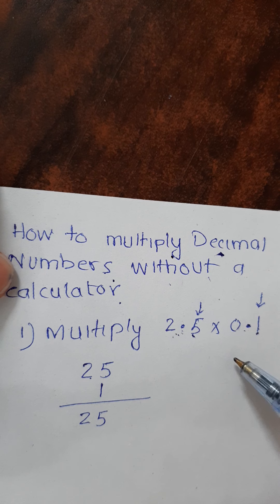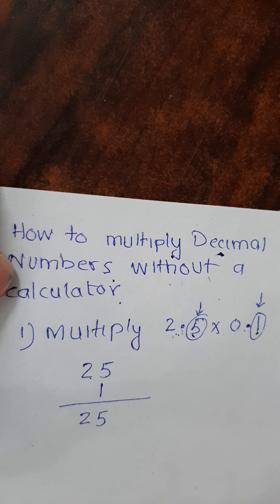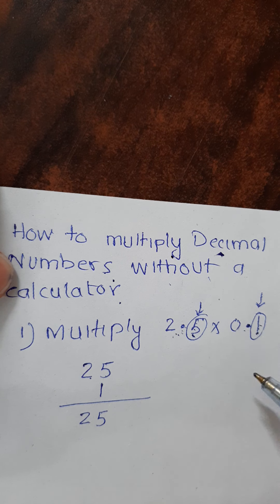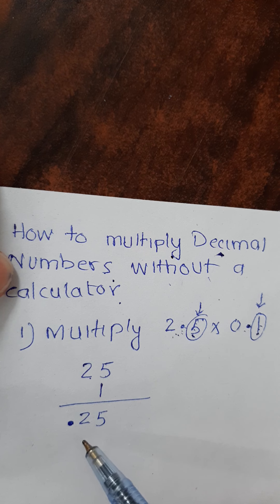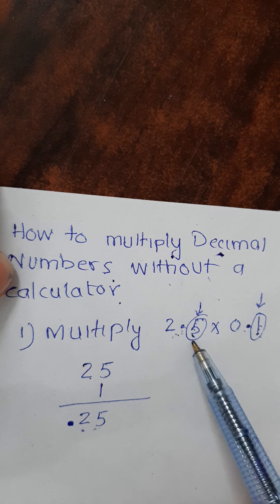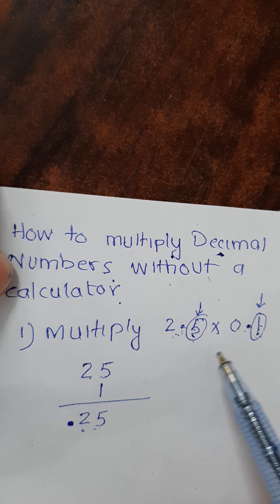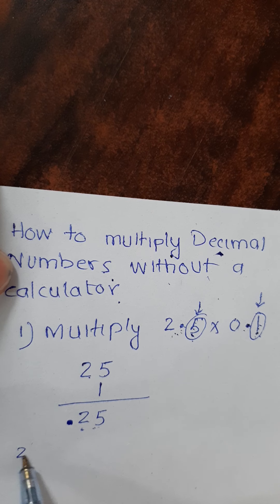We have one digit after the decimal here, and one digit after the decimal here, so in total we have two digits after the decimal. You should place your decimal at the point where you have two digits after it. So the answer is 0.25.